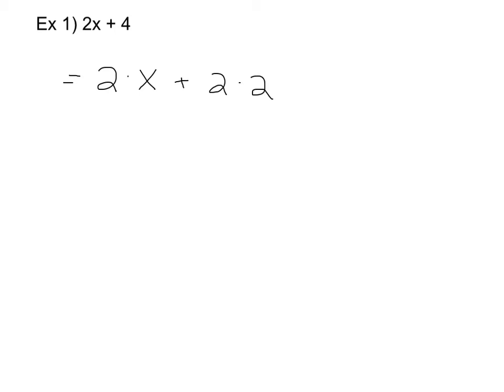Now we want to see what factors our terms have in common. We can see that the 2x and the 2 both have a 2 in common. They don't have anything else in common, so we are going to factor the 2 out, and we are left with the x, the plus sign, and the 2.